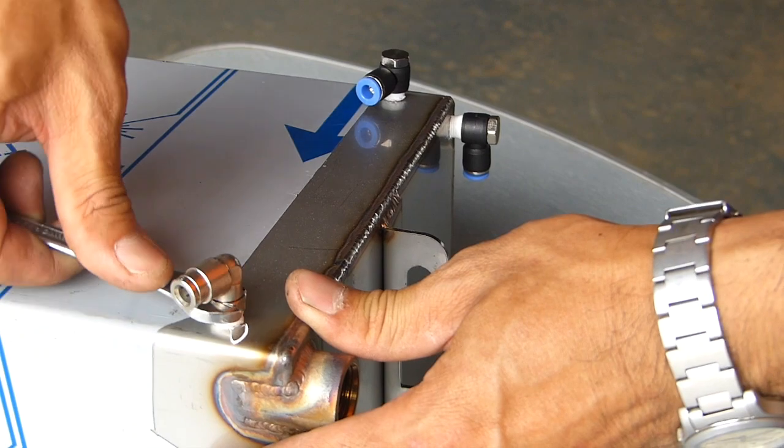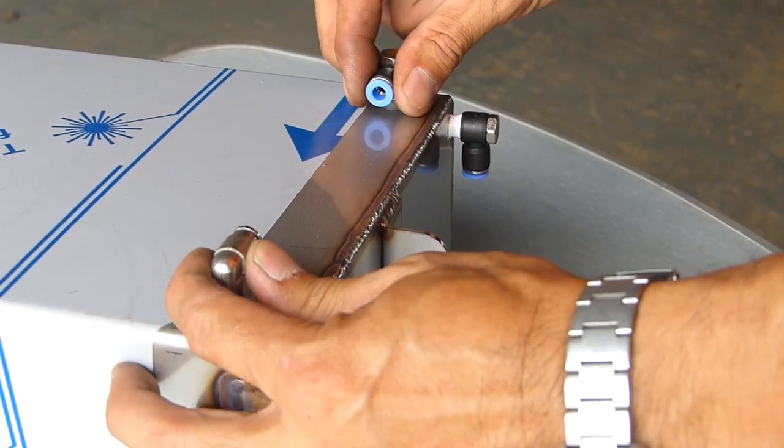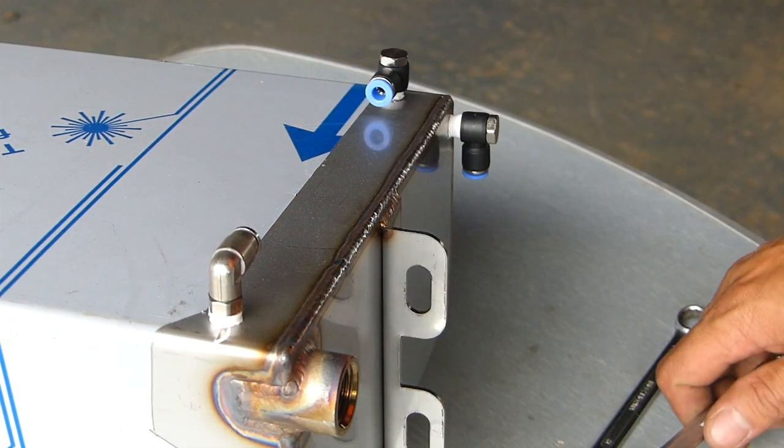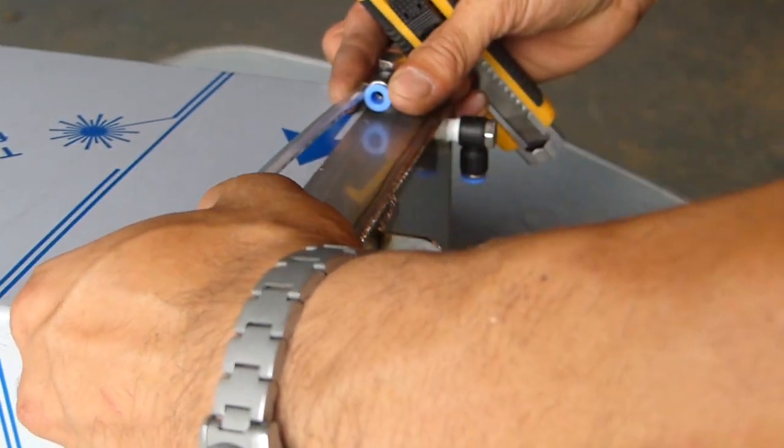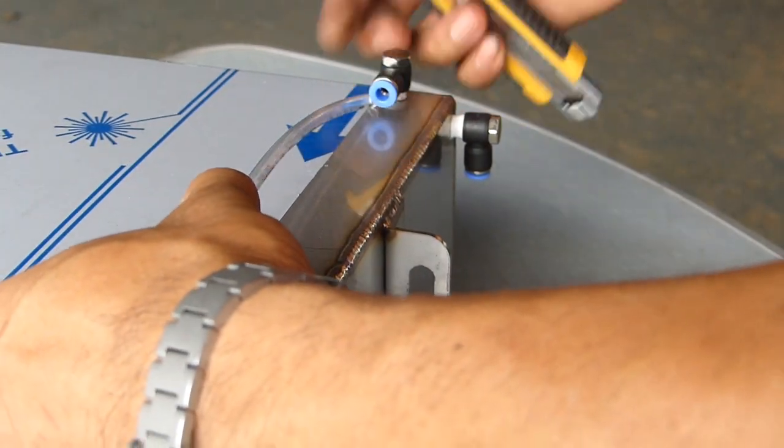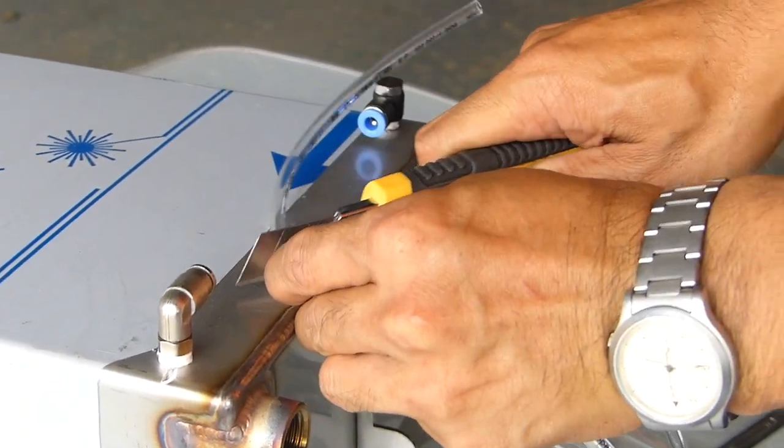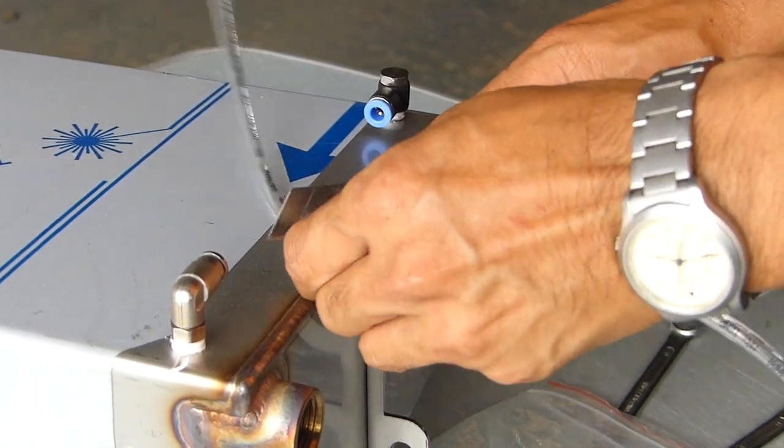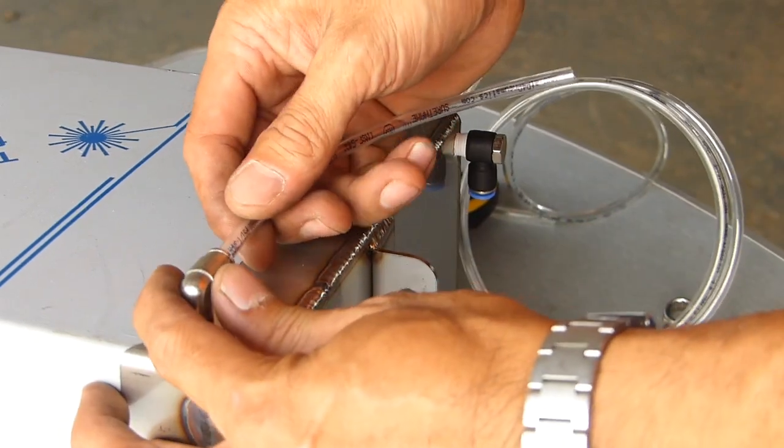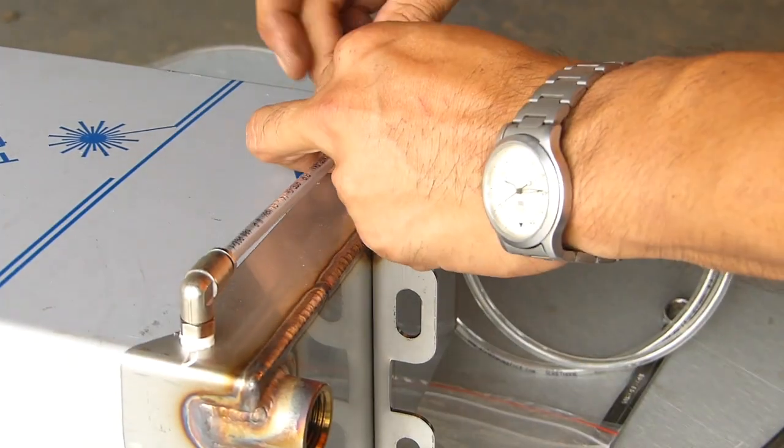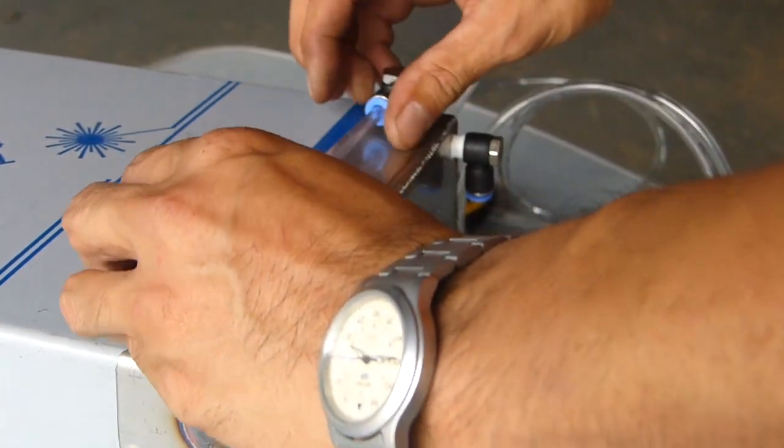Now we're going to install the clear tube for the level meter. Measure the clear tubing and cut it to length. Now just push them in. It'll give it a good seal. And there you go. That's your clear tube level meter.